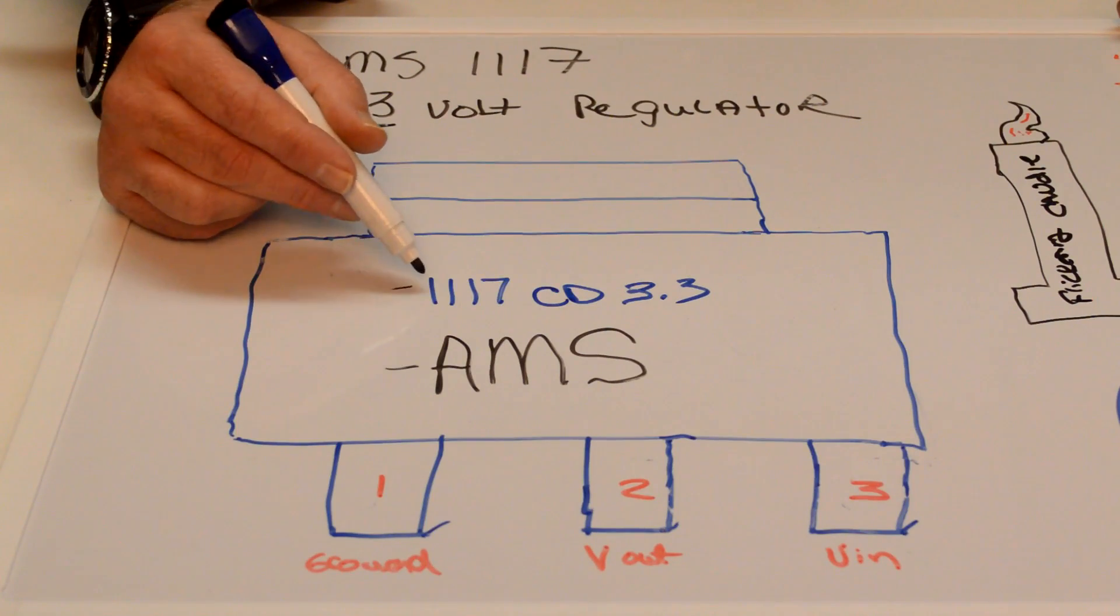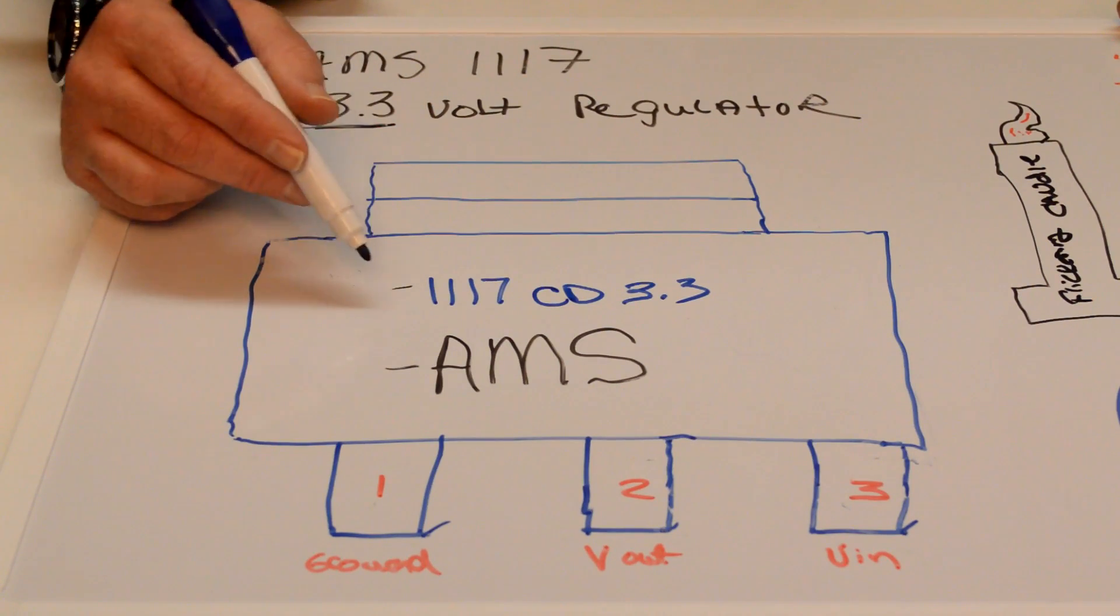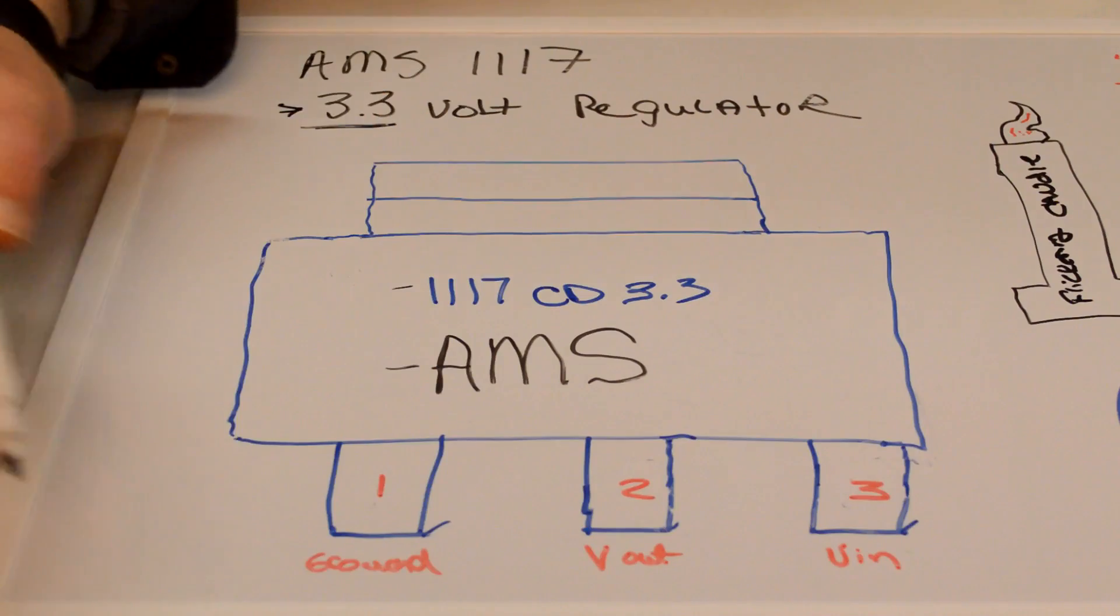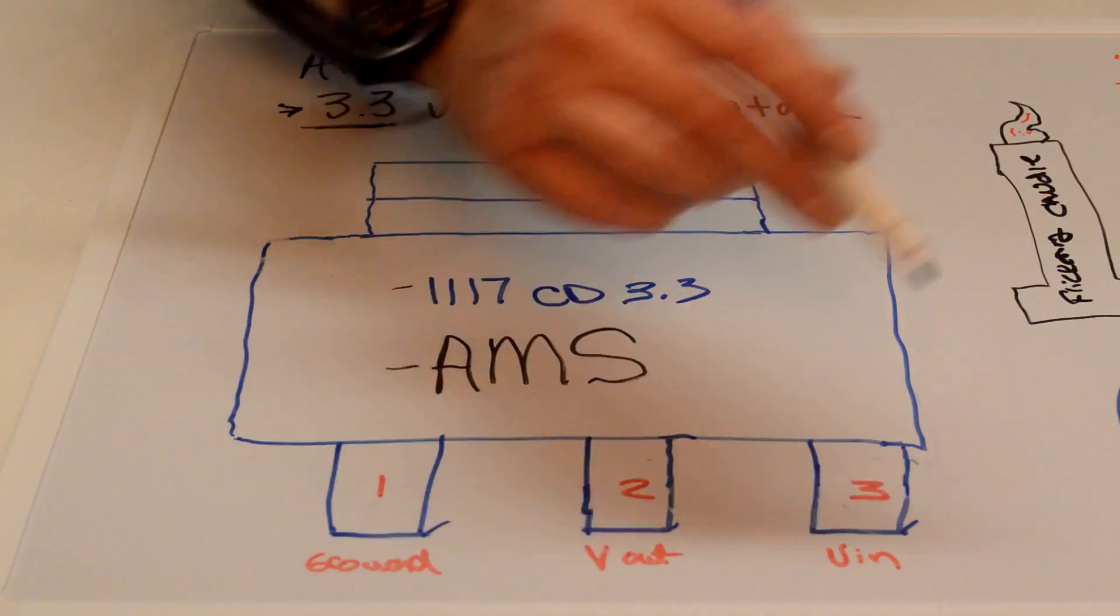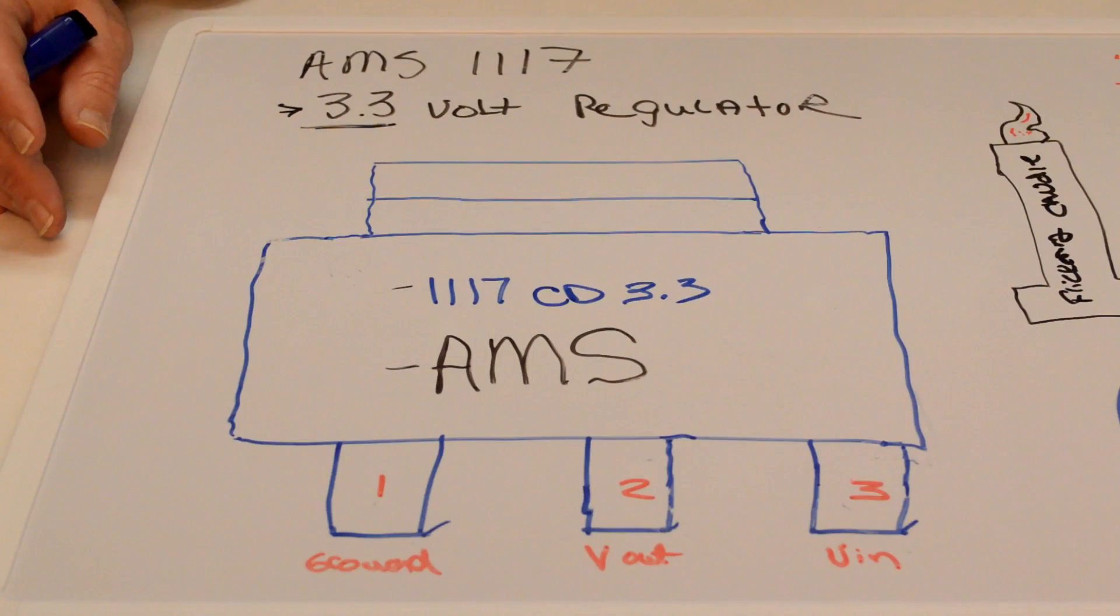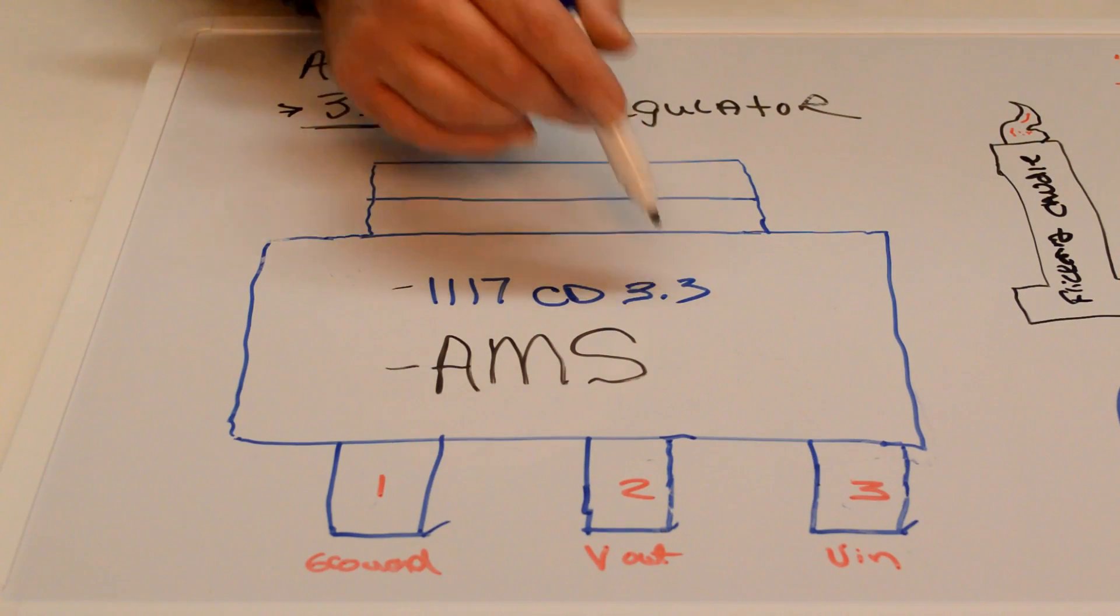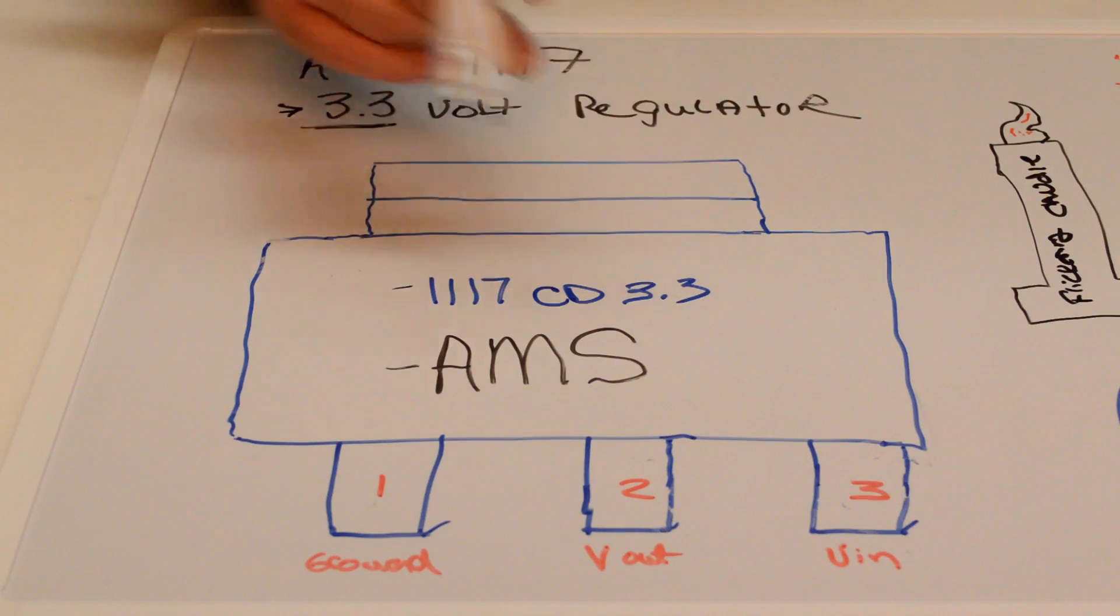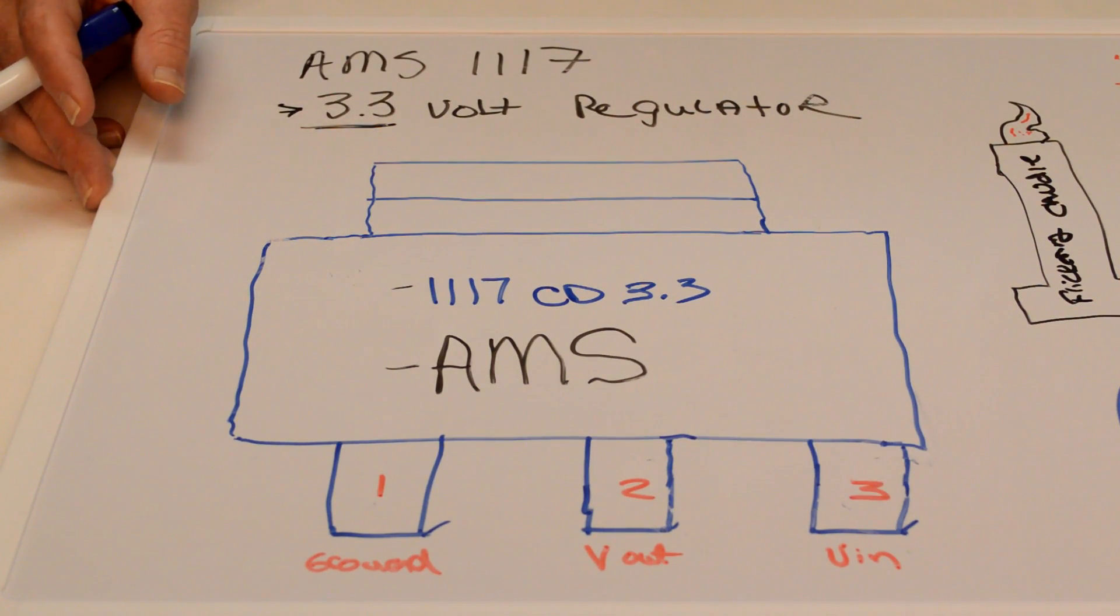Now this particular one the 1117 AMS chip delivers 3.3 volts regulated output. So if I put my five volts into this out comes 3.3 volts. Now I had said that our candle run on three volts because of the two batteries 1.5 times two is three volts. So this is a third of a volt over but the LED circuitry will not mind the extra third of a volt so it's not that critical.